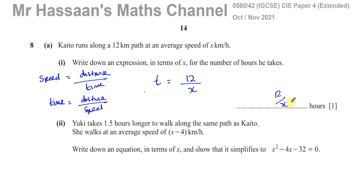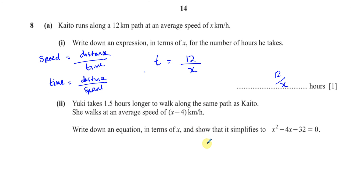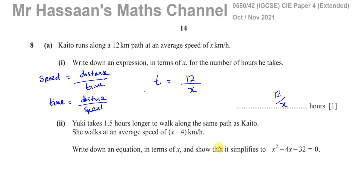Then it says: Yuki takes 1.5 hours longer to walk along the same path as Cato. She walks at an average speed of x minus 4 kilometers per hour. Write down an equation in terms of x and show that it simplifies to the given expression.